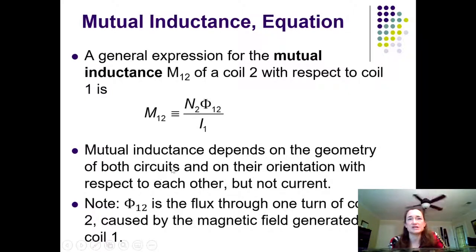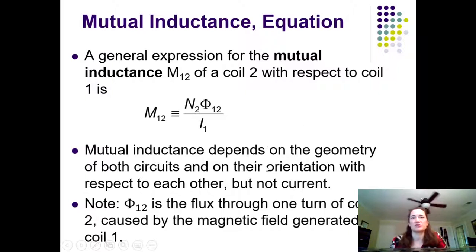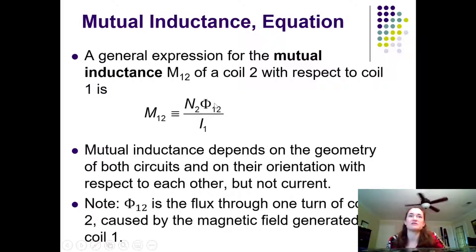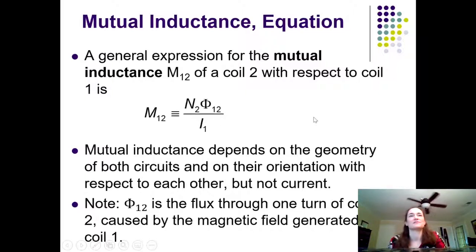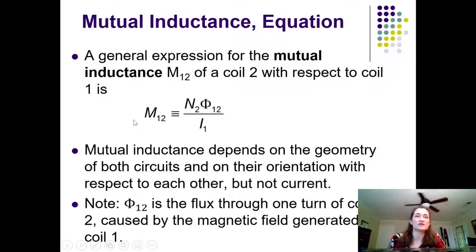The mutual inductance depends on the geometry of the circuits, their orientation with respect to each other, and their physical properties like the number of turns, but it shouldn't depend on the current — that's why we divide out by it in the denominator. Let's go through an example and explain the importance of this coefficient M1,2.